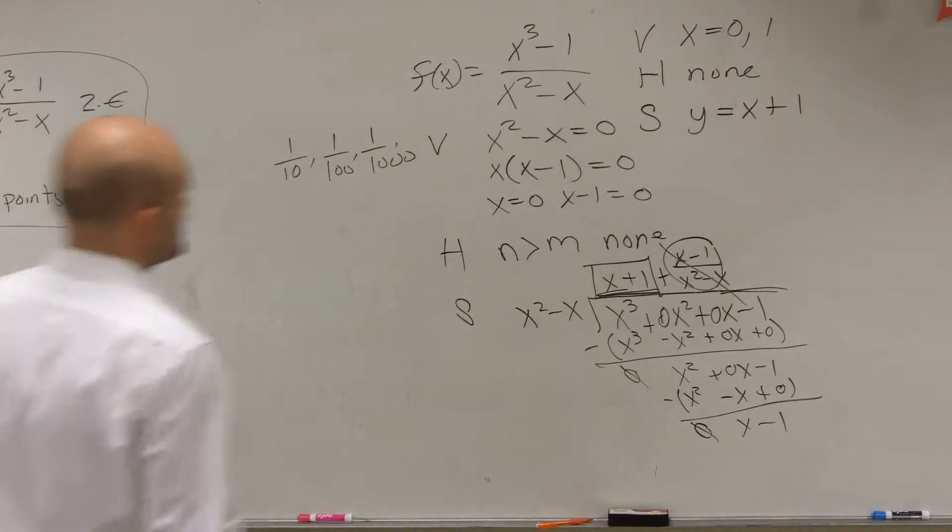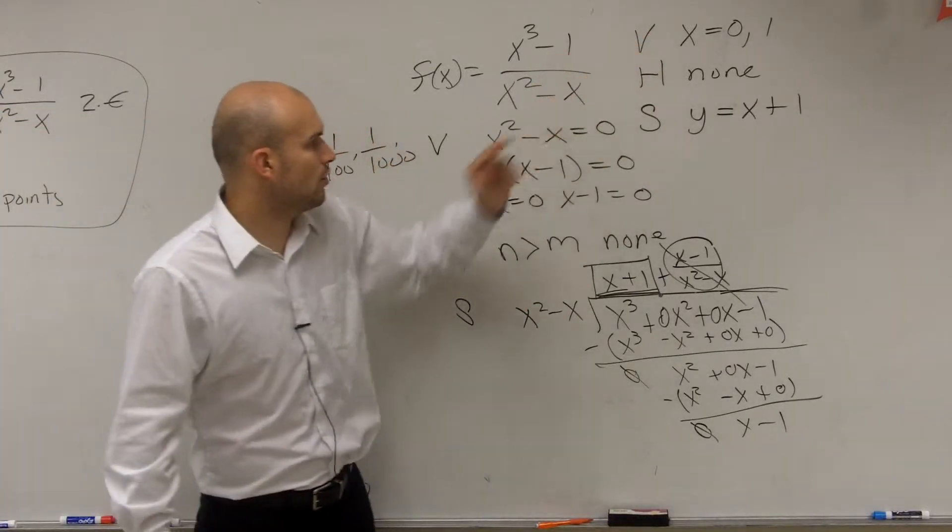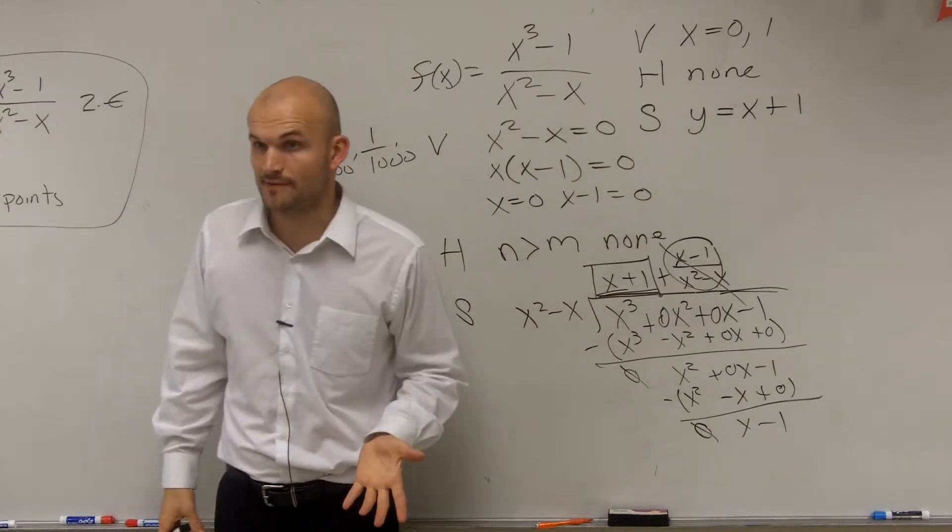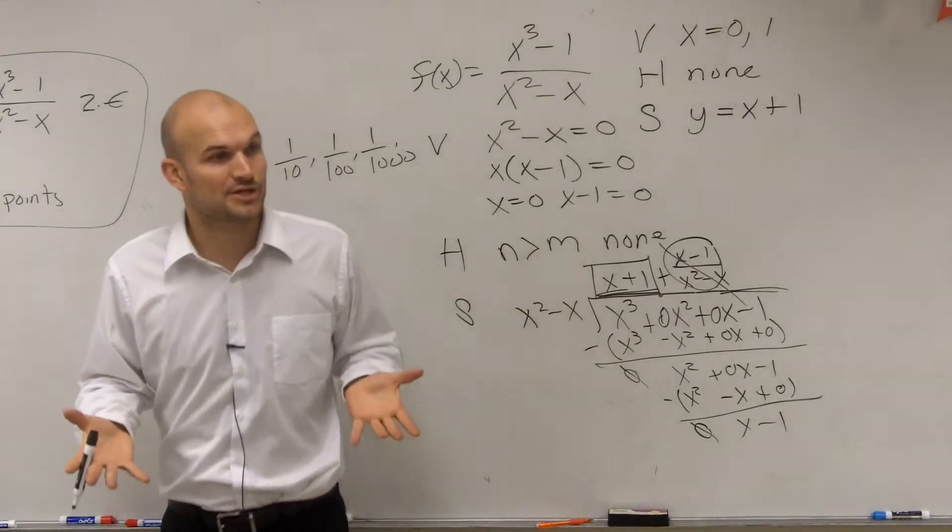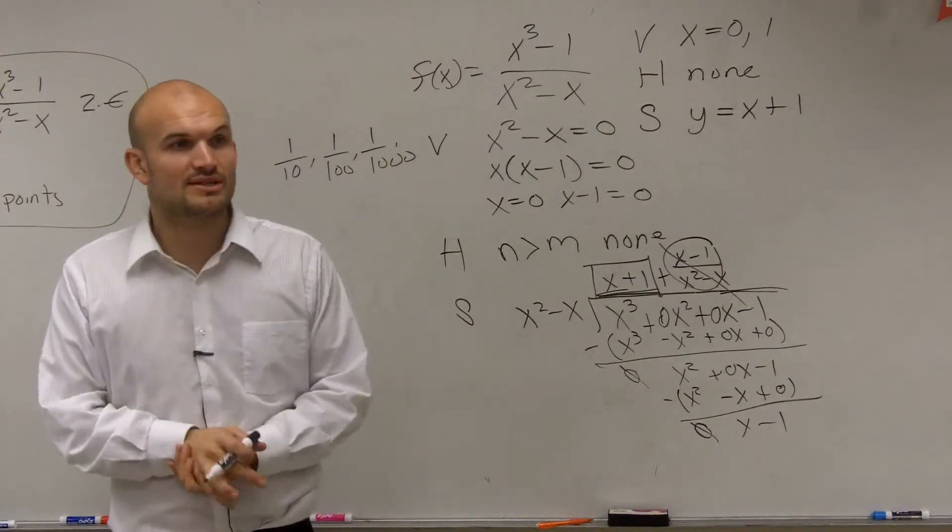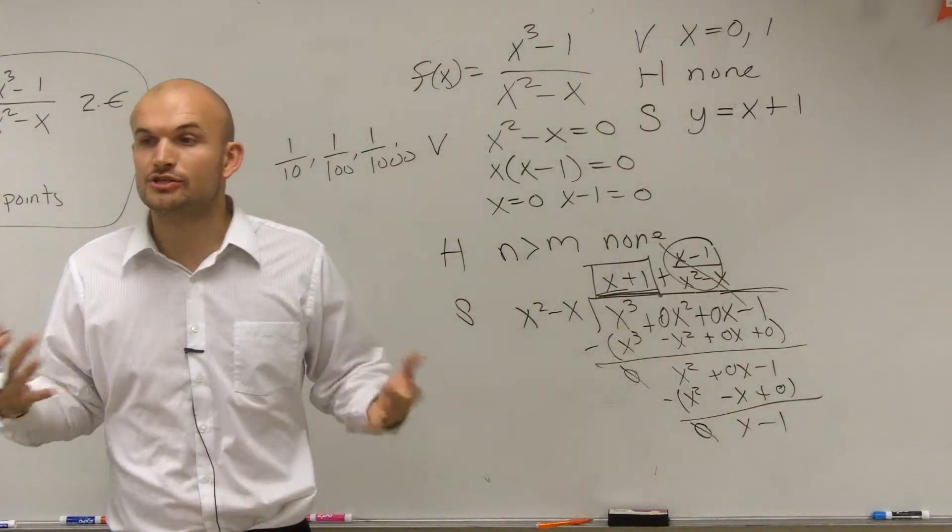So what we did was we determined by showing all our work, we found the vertical, horizontal, and slant asymptotes. So now the last thing we need to do is determine what this graph looks like and determine solution points.